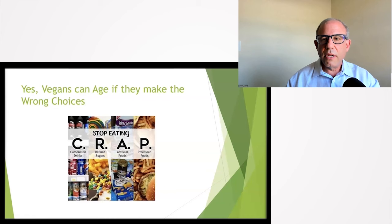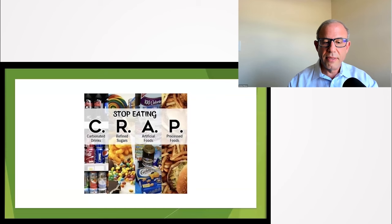The first point I would make is even if you're eating just plants you can still make the wrong choices. You need to stop eating what I call CRAP: carbonated drinks, refined sugars, artificial foods, and processed foods. We can just call this processed foods. In this country, Oreos are vegan. If your diet is mainly Oreos or things like it, you're not going to be very healthy. So just stop it.